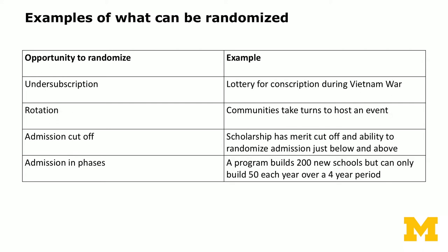Sometimes there is under-subscription. A lottery for conscription during the Vietnam War can be analyzed as a natural experiment. You might have communities taking turns hosting an event, and if the order is randomized, that enables you to evaluate program effects. Admission cutoffs also offer randomization opportunities: scholarships have merit cutoffs, and you can randomize admissions just below and just above the cutoff by creating a range. Admissions in phases — a phased-in design — also offers opportunities to evaluate causal effects.